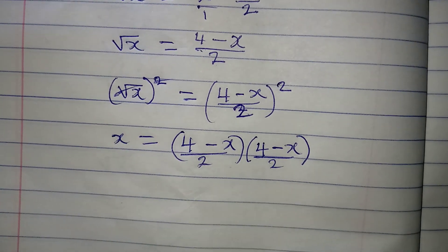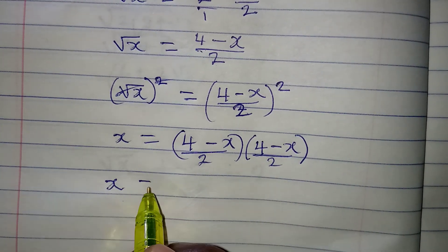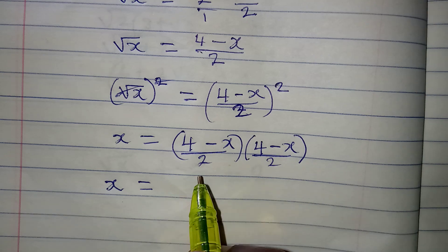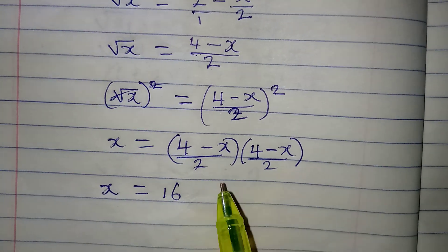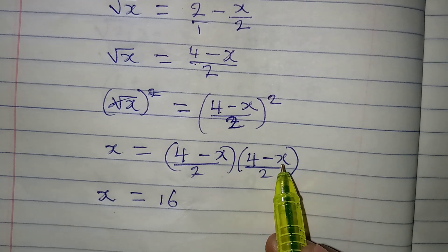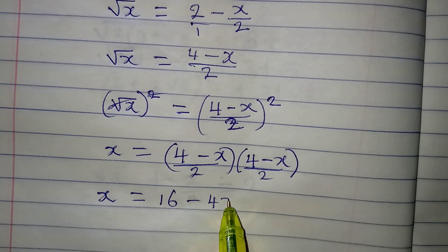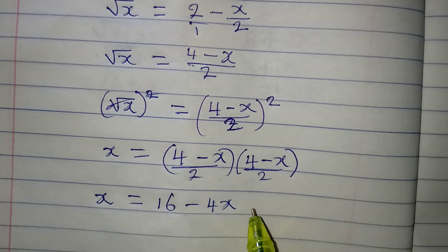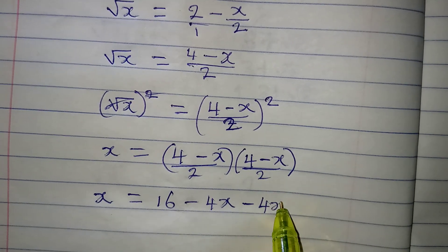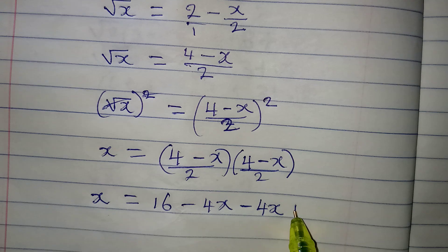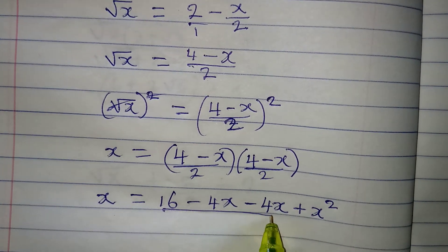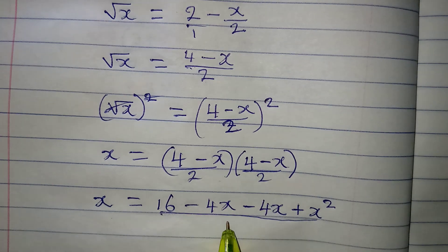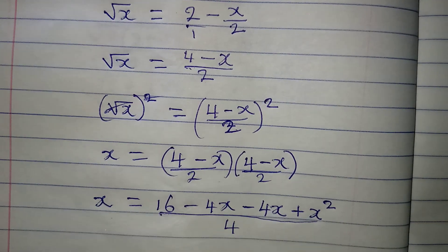x will now be 4 minus x over 2 in two places. Now, let us open the brackets. x is already alone and it will be equal to 4 times 4, that will be 16, 4 times minus x, that will be minus 4x, minus x times 4, that will be minus 4x, minus x times minus x, that will be plus x squared. And the whole of this will be over 2 times 2, which is 4.